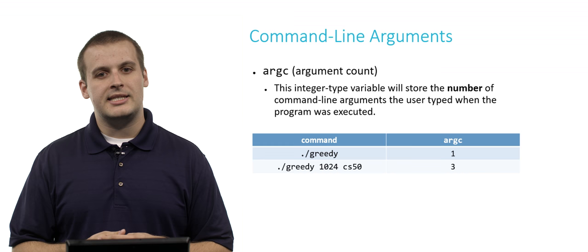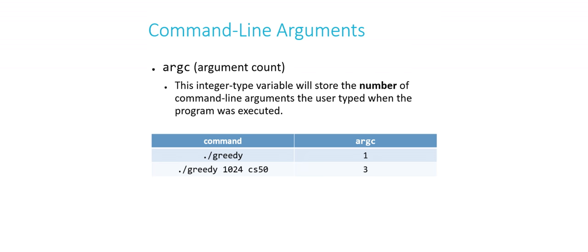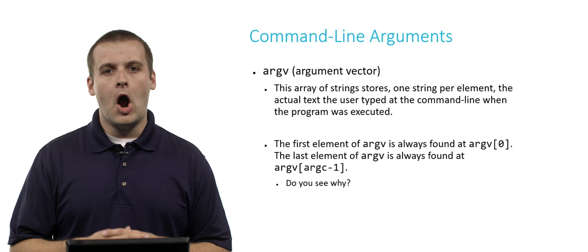If these are typed ./greedy 1024 CS50 at the command line, argc in that case would be 3. And we know this because the way that the division between the strings is detected is whether there is a space or a tab or something like that between them. So any amount of white space, so-called, between the values typed at the command line indicates how many there are. So ./greedy space 1024 space CS50, argc in that case is 3.